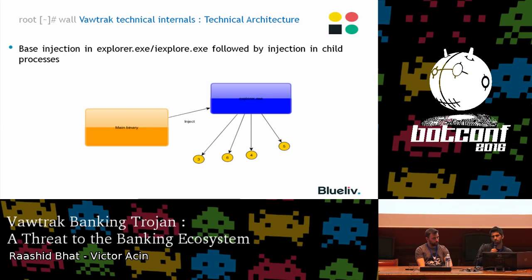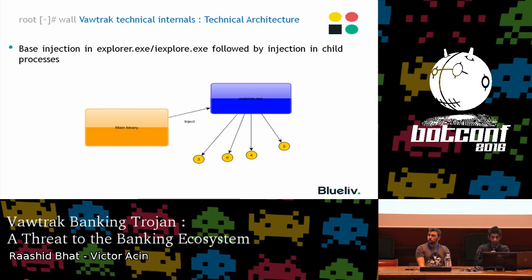During the initial stage of infection, Vawtrak's process flow basically injects into explorer.exe, followed by injection into other processes or the browser — like Internet Explorer or any other browsers currently running on the system. That's the base flow of infection. It follows all child processes in explorer.exe and makes communication to the command and control server from the running browser.